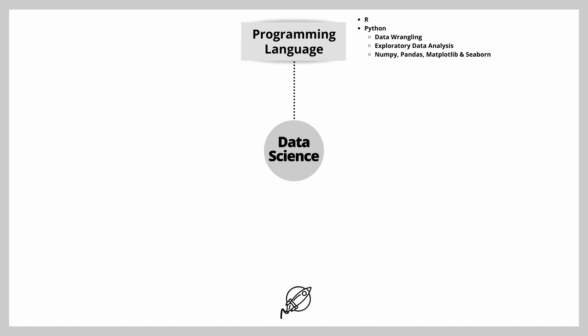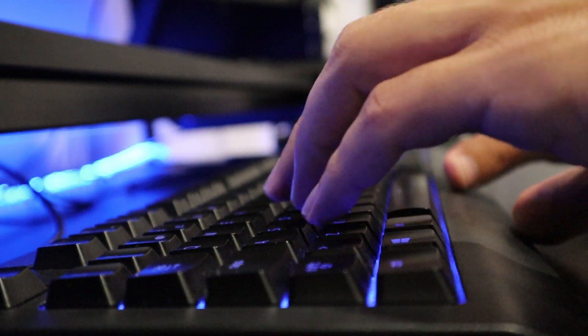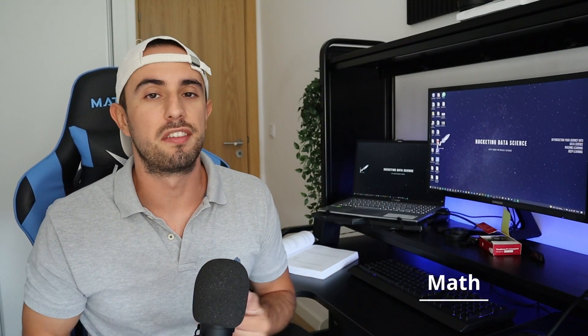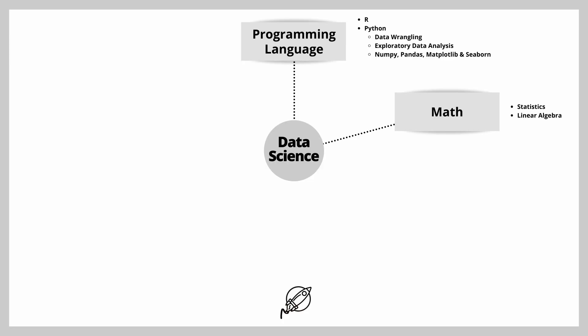The first topic is a programming language. You have two options: Python and R. Python is my favorite and I would suggest you go with Python. You need a programming language because it will be the foundation for your projects — you can handle data, clean it, transform it, and use it for machine learning. Focus on packages like NumPy, Pandas, Matplotlib, and Seaborn. There are two great books I recommend: one for Python only and the other for data analysis with Python.